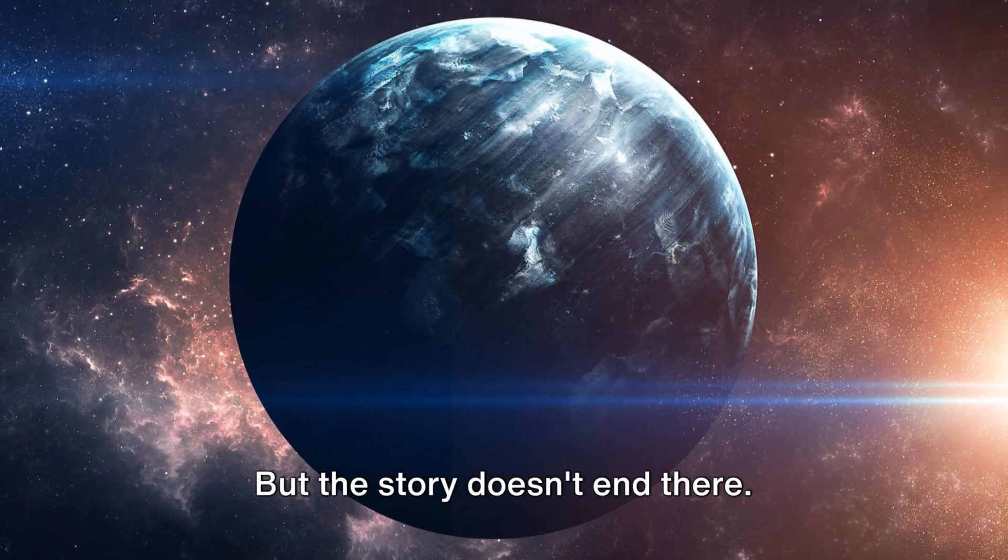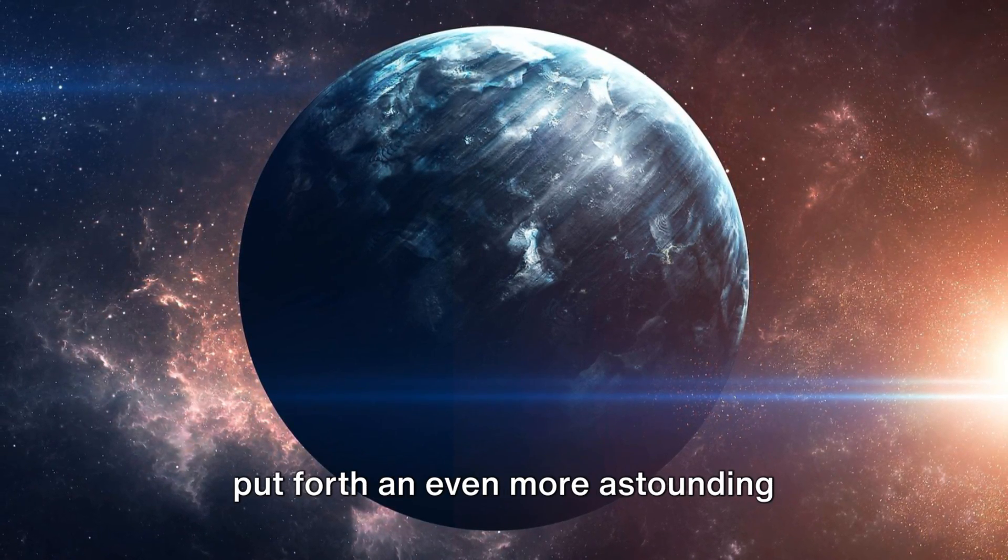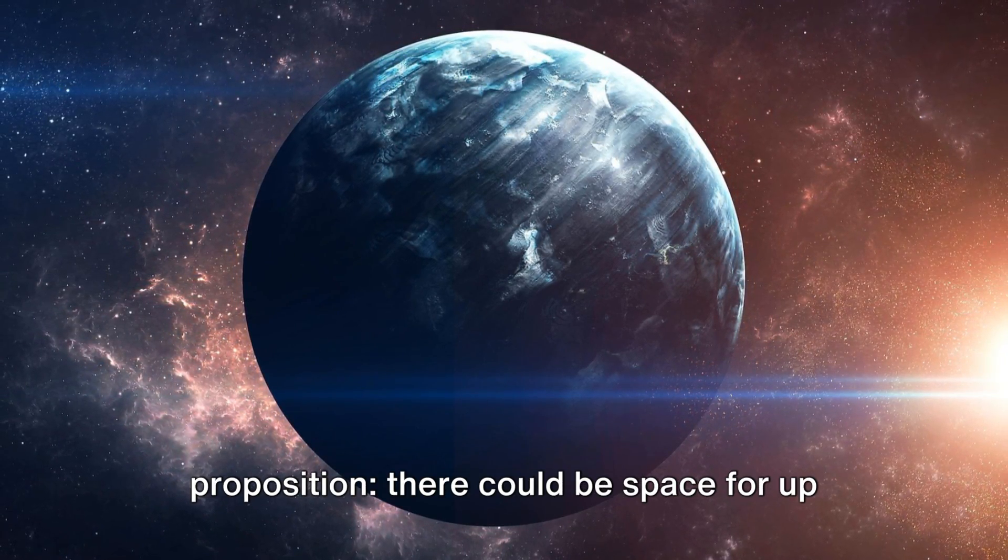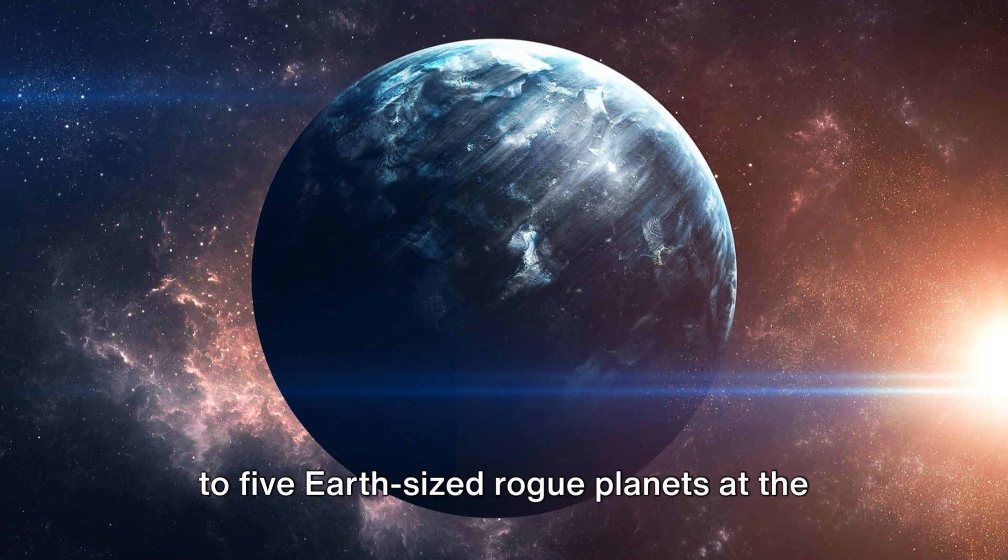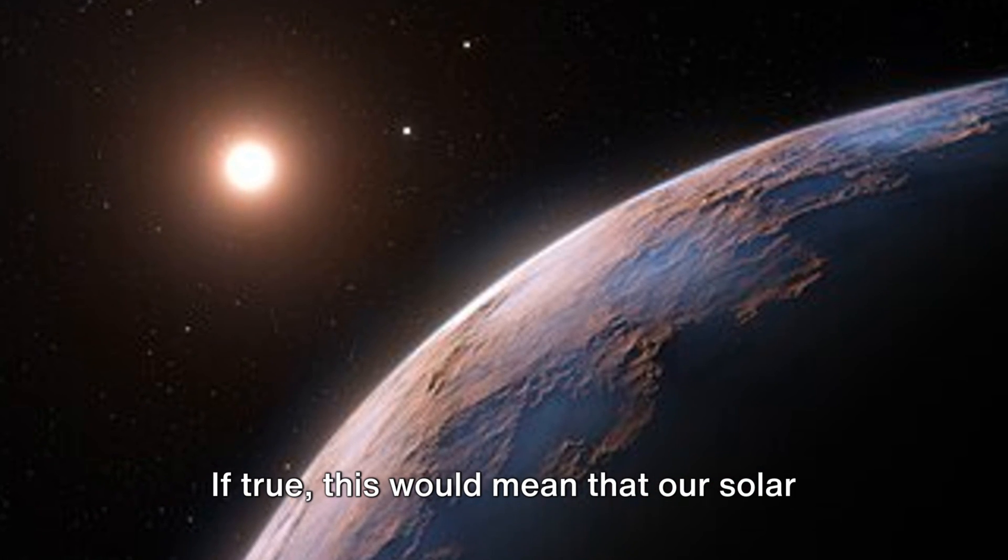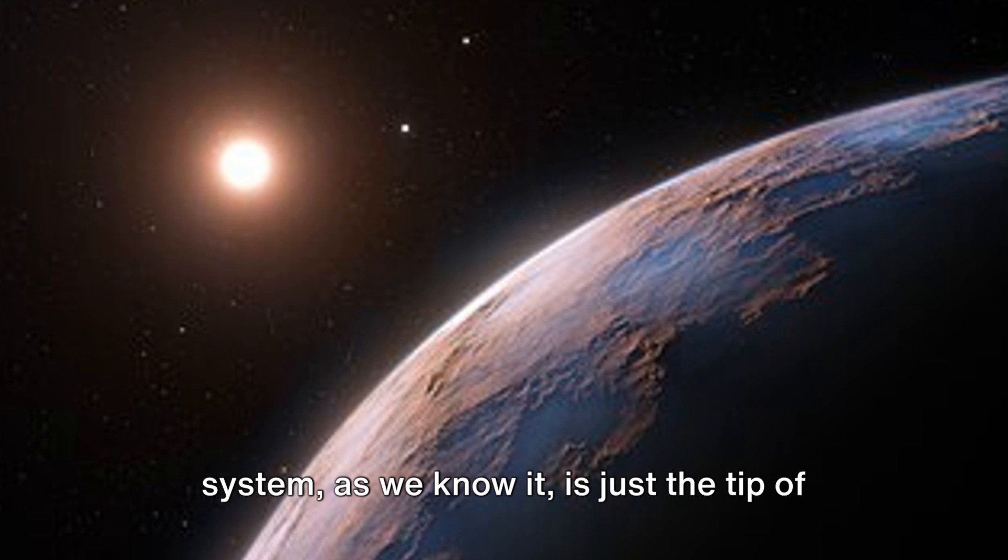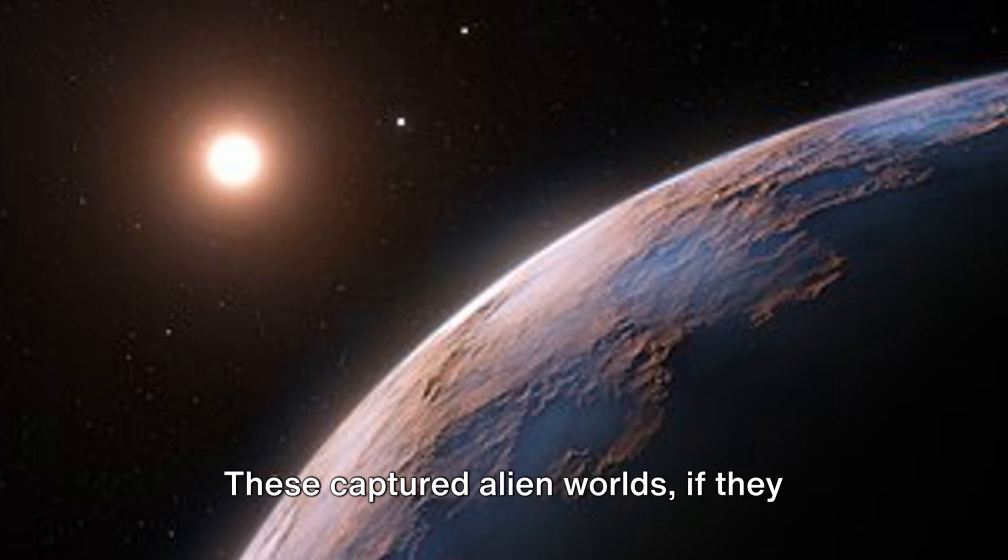But the story doesn't end there. A paper published in 2024 put forth an even more astounding proposition. There could be space for up to five Earth-sized rogue planets at the edge of our cosmic neighborhood. If true, this would mean that our solar system, as we know it, is just the tip of the iceberg, with several alien worlds hiding in its outer periphery.